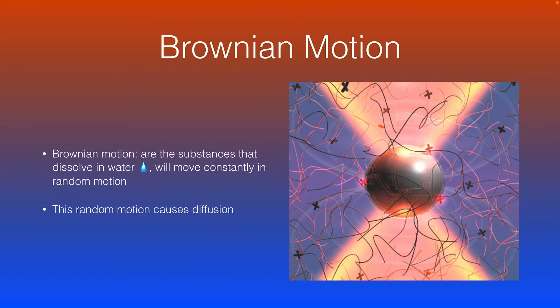And Brownian motion. Brownian motion is a substance that dissolves in water and it will move constantly around. This random motion causes diffusion.